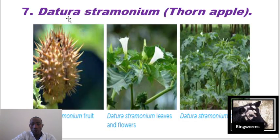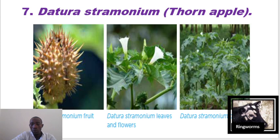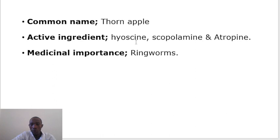The other plant is Datura stramonium, which is the thorn apple. It's a poisonous plant within the family Solanaceae. It's used in treatment of ringworms — you can see here this is cattle that has been infested by ringworms. You need to always have your protective gear; PPE is important in such cases. Datura stramonium contains active compounds like Atropine, Scopolamine, and Hyoscine, which are used in treatment of ringworms.